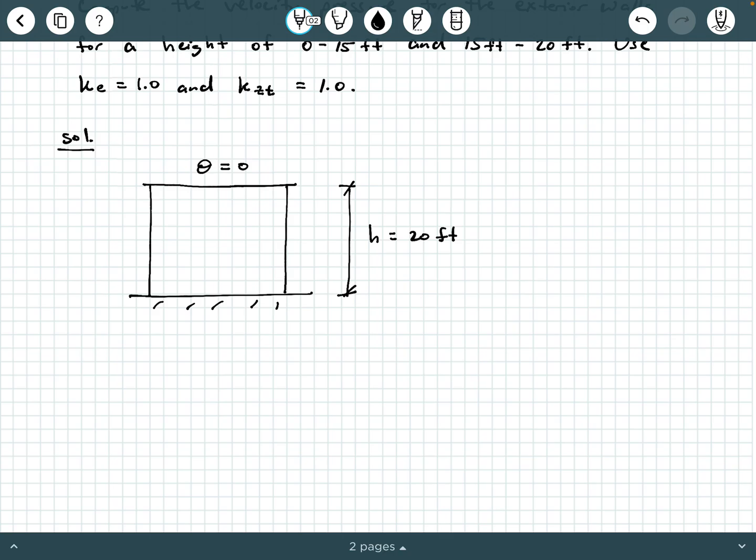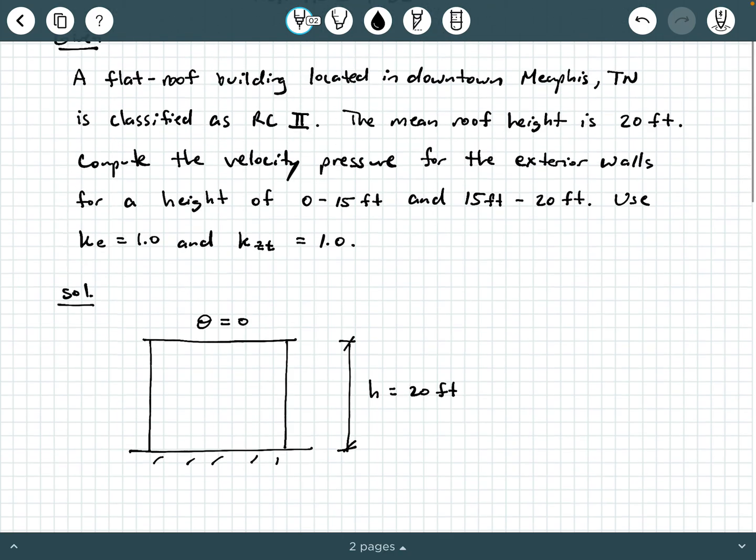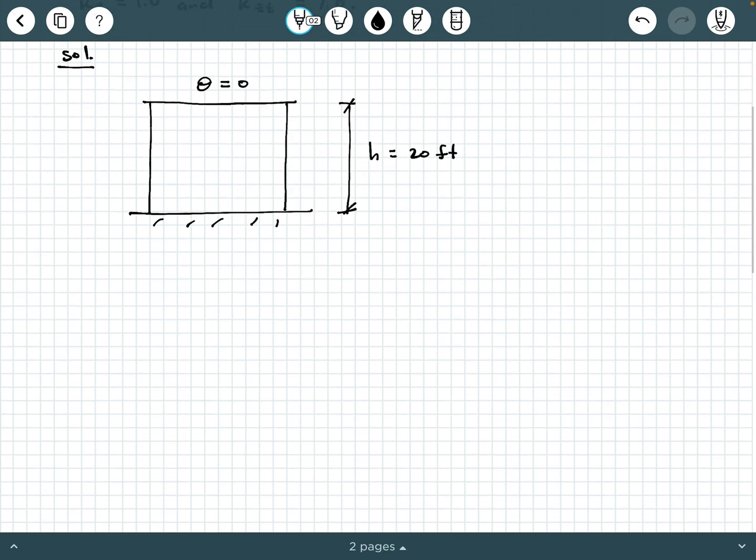So the velocity pressure, if you remember that formula, we're going to get that from ASCE 7-22, and that's going to be equal to QZ equals 0.00256 KZ KZT KE V squared. And I'm going to make a note here, this is equation 26.10-1 from ASCE 7-22.